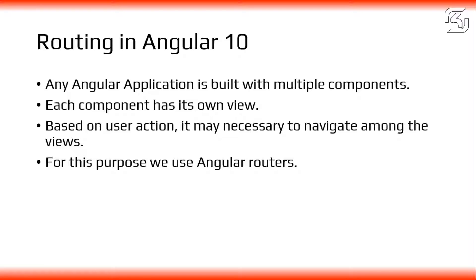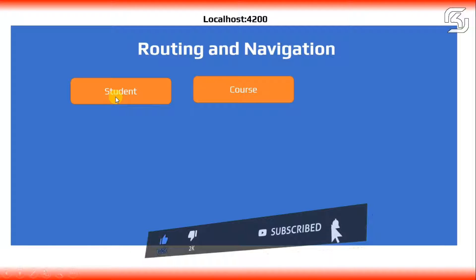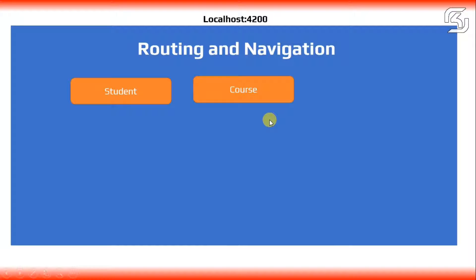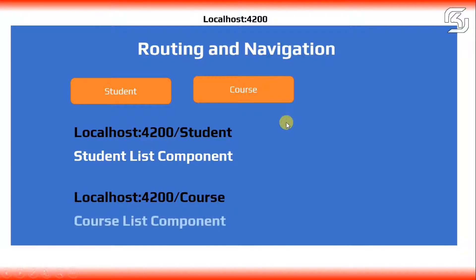For example, in our class we will manage a permanent application. When we run the project, the server runs at localhost:4200. In the application we have two buttons - a Student button and a Course button. When you type localhost:4200/student and click the Student button, the student list component opens. Similarly, localhost:4200/course opens the course list component.